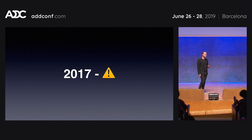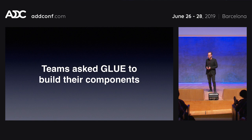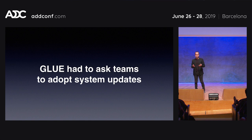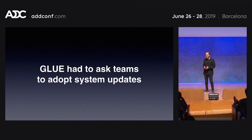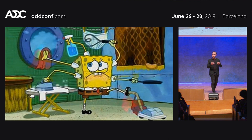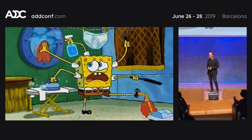Fast forward to 2017, where we started seeing issues. Feature teams were asking the GLUE team to build components for them because they didn't feel confident creating UI and owning it, and there was no clear understanding of when a component should be part of the component library versus something a team should make themselves. On the other side, when the GLUE team wanted a system-wide change, they had to ask every feature team to update — and often teams would reject this, citing high-priority work or A/B tests that the change might conflict with. The GLUE team became a bottleneck and couldn't drive the changes they wanted.